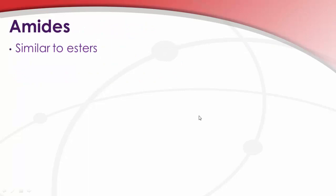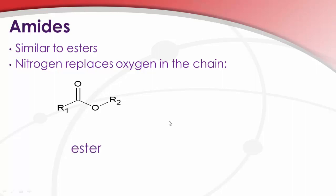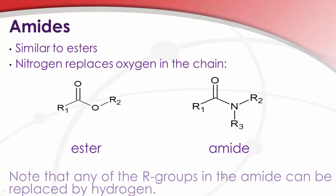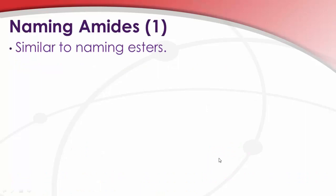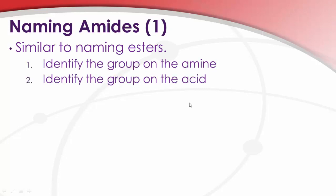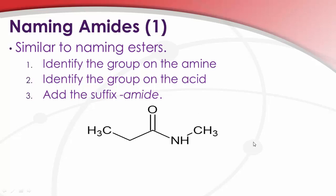Now, for amides. They're similar to esters in the sense that they're derivatives containing a carbonyl, but instead of having an oxygen, they have a nitrogen. So our ester, remember, looked like this. The amide just replaces this oxygen with a nitrogen. Any of these R groups could be replaced by hydrogen, and this is still an amide. So, when we go to name these things, then it's similar to naming esters. We'll identify the group on the amine, identify the group on the acid, and add the suffix amide, right?